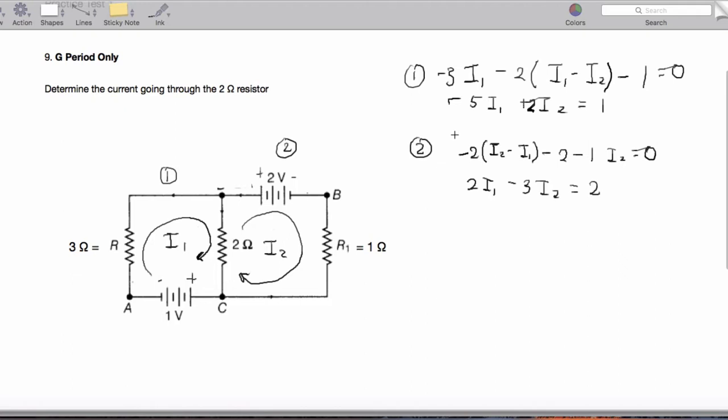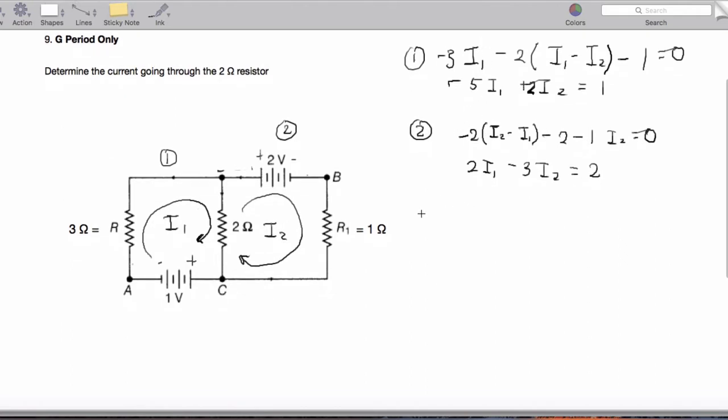Now we can simplify. We've got two equations. I'm going to take equation one and multiply it by two, and equation two and multiply it by five. That gives me negative 10I1 plus 4I2 equals two, and for equation two, 10I1 minus 15I2 equals 10.